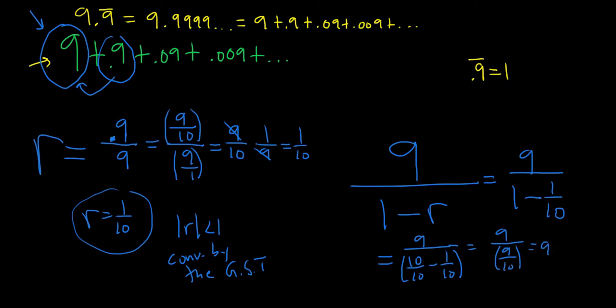So this is 9, and then division by 9 tenths is multiplication by 10 ninths. Ah, there it is. Sure enough, we get 10, which is what we thought we were going to get at the beginning of the question.